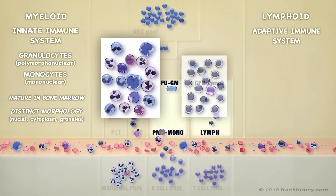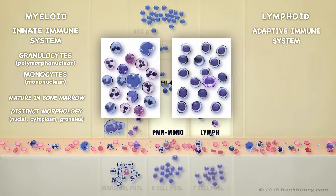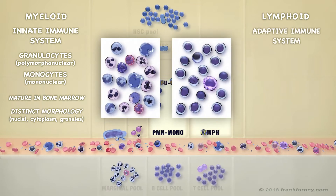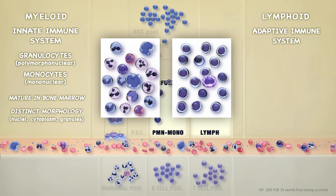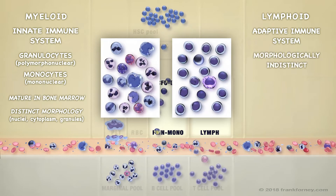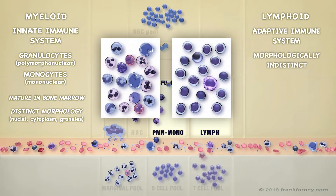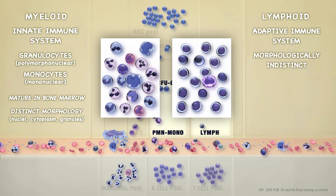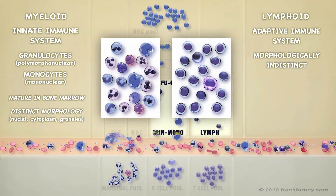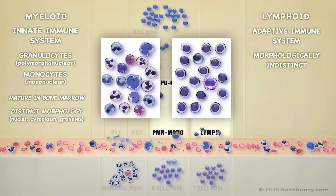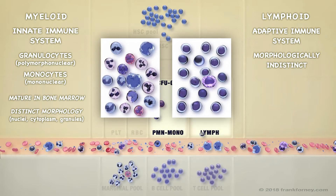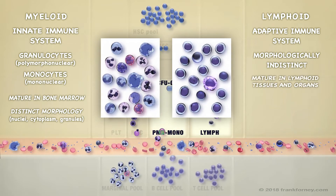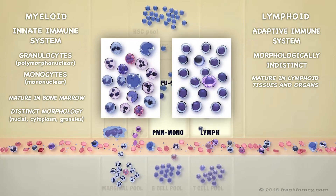Most lymphocytes, however, are morphologically indistinct — they basically all look alike. They are the cells of the adaptive immune system, which operates more discreetly. Their various molecular functions are visualized only indirectly.